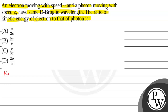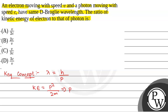First of all, we will see what the key concept is to solve this question. The key concept is: lambda, which is the de Broglie wavelength, is equal to h by p, where p is the momentum. And kinetic energy is equal to p squared by 2m. So momentum p will be equal to root over 2m into kinetic energy.